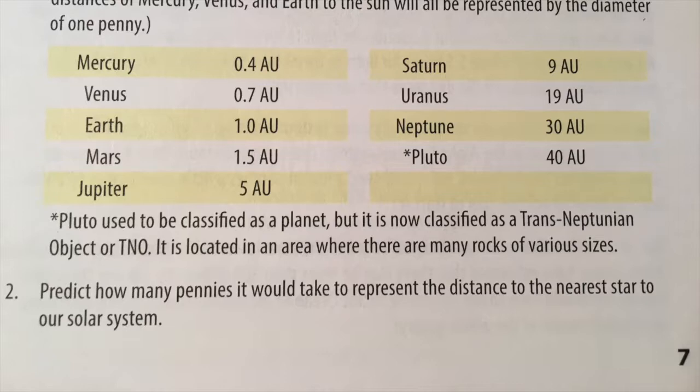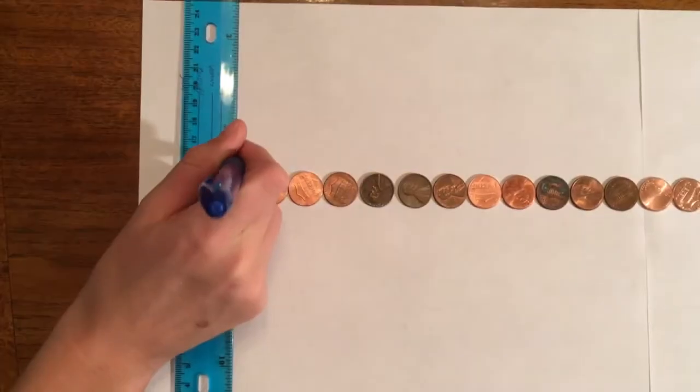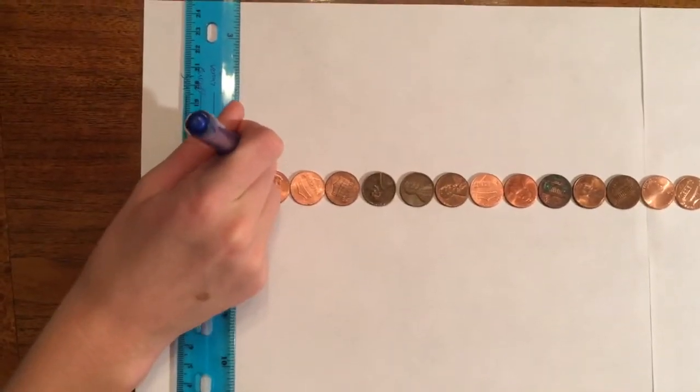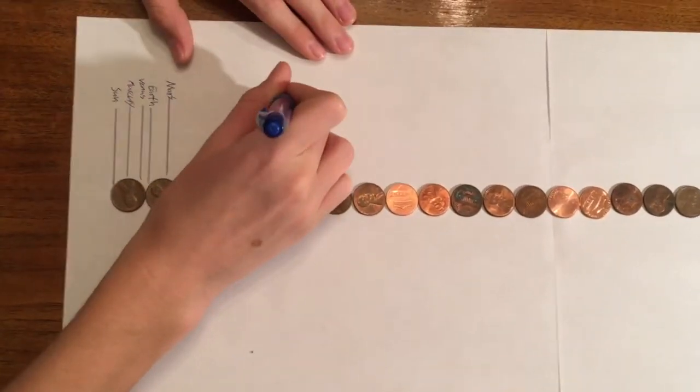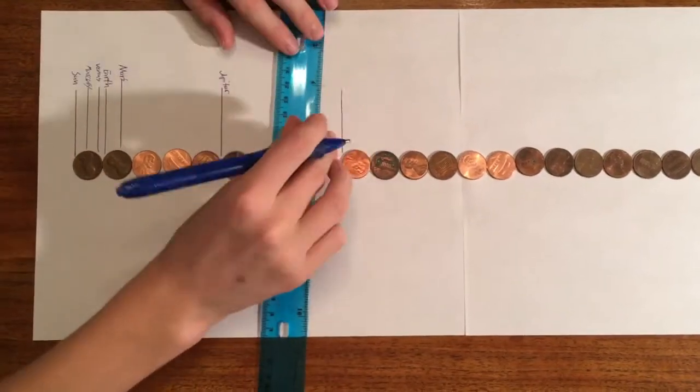Students will use the chart on page 7 to draw and label vertical lines for each of the nine planets in our solar system based on their distance from the sun in astronomical units.